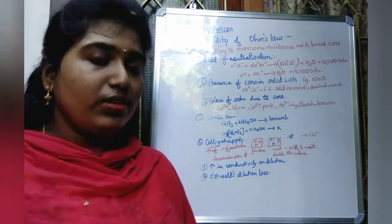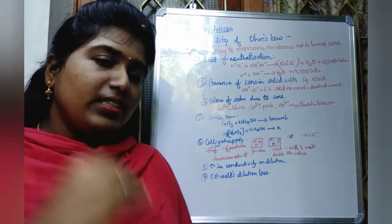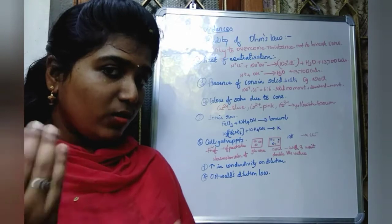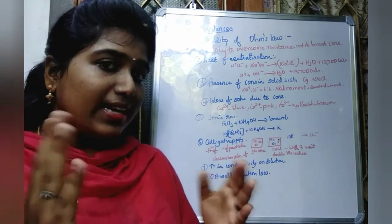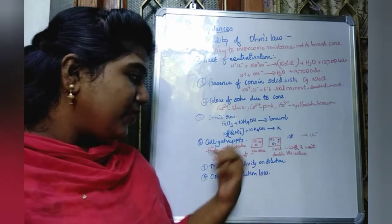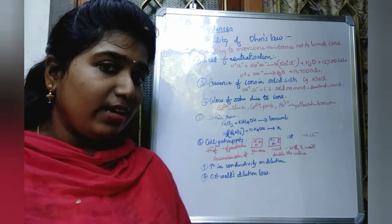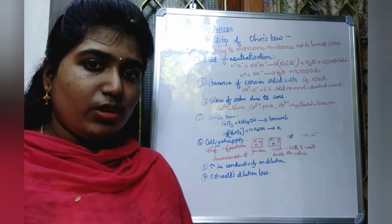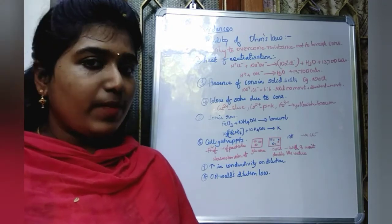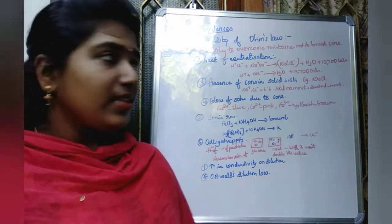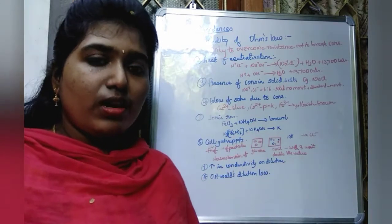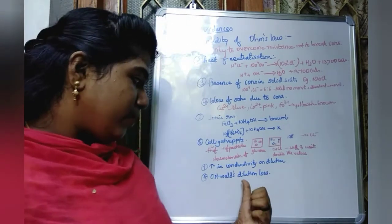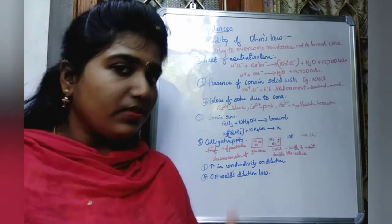The seventh evidence is conductivity. On diluting a solution, the degree of ionization increases, so the number of ions increases, and conductance also increases. Conductivity increases with dilution and reaches a maximum at infinite dilution. Finally, Ostwald's dilution law is also obeyed by electrolytes. These are the evidences supporting the Arrhenius theory of dissociation of electrolytes, and Ostwald's dilution law is mainly based on the dissociation of weak electrolytes.